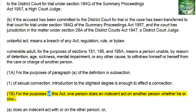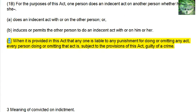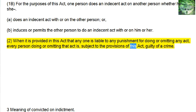Subsection 1B: for the purposes of this act, one person does an indecent act on another person whether he or she: 1A, does an indecent act with or on the other person; or 2B, induces or permits the other person to do an indecent act with or on him or her. Subsection 2: when it is provided in this act that anyone is liable to any punishment for doing or omitting any act, every person doing or omitting that act is, subject to the provisions of this act, guilty of a crime.